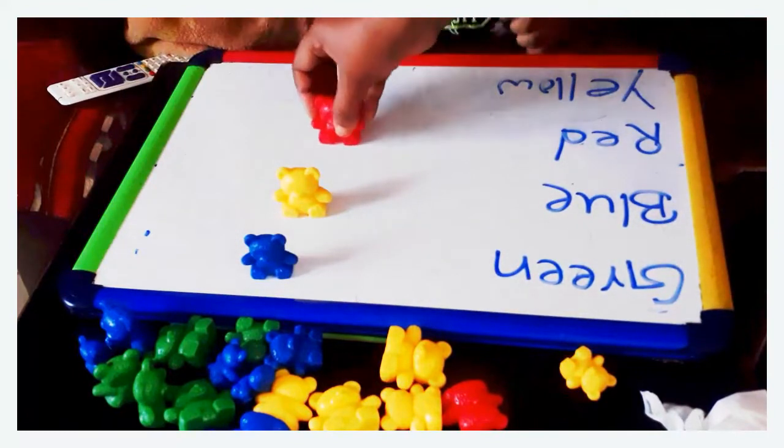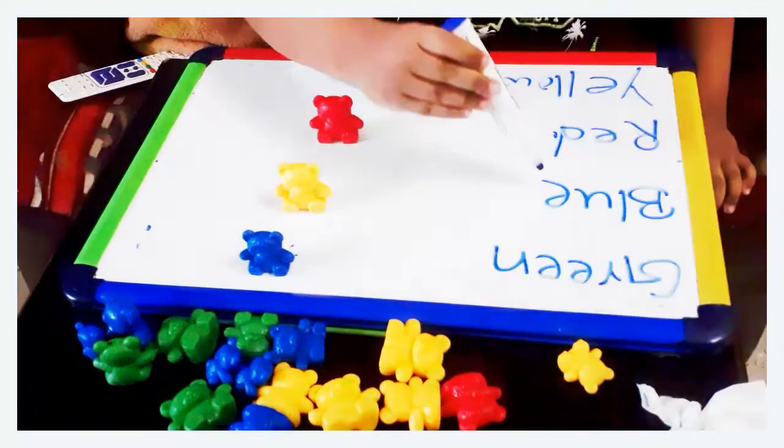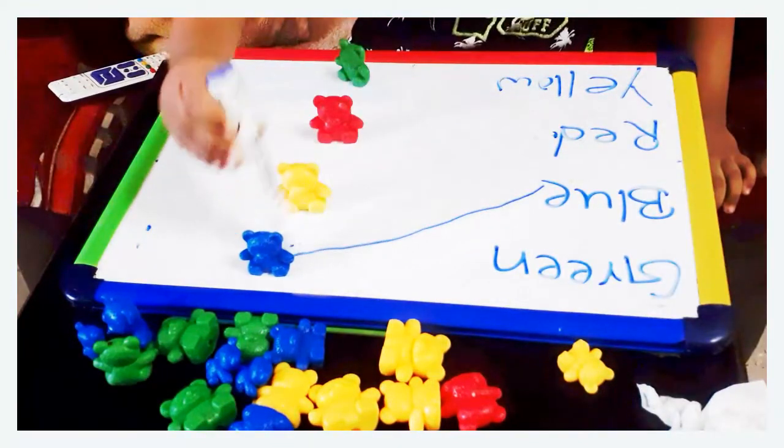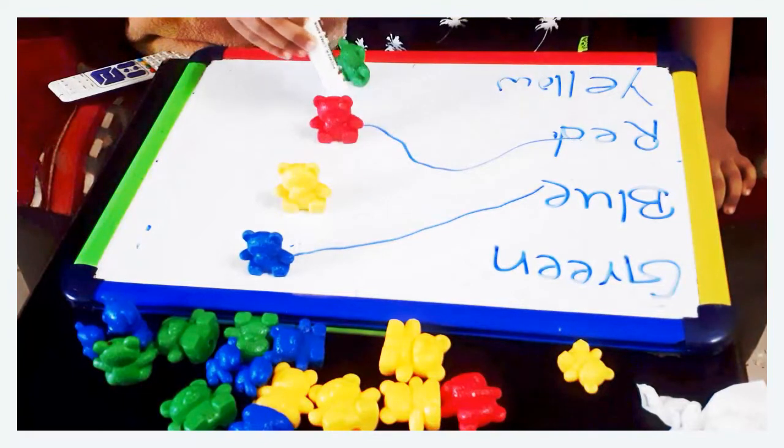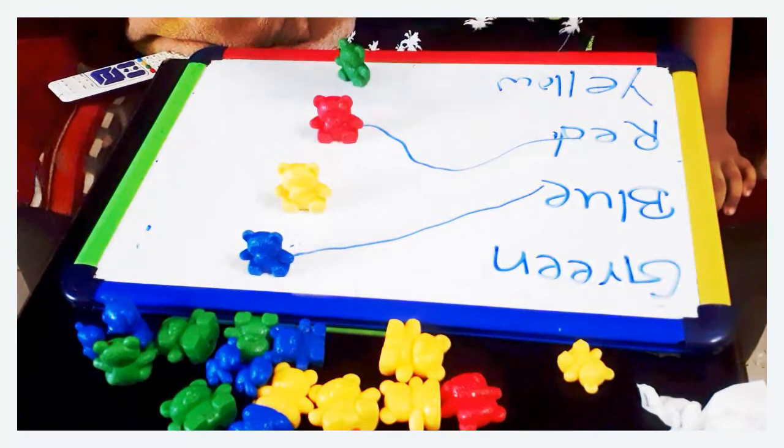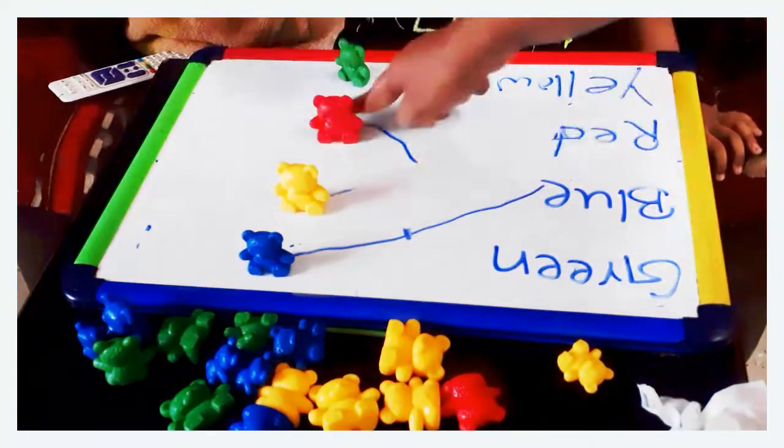When matching the colors, I used the whiteboard and wrote the names of the four basic primary colors. Then I kept the teddy bears in front of it, jumbled up. All you have to do is match the name with the teddy bear. This is one activity that we can use these teddy bears for.